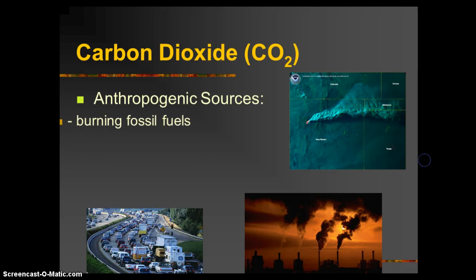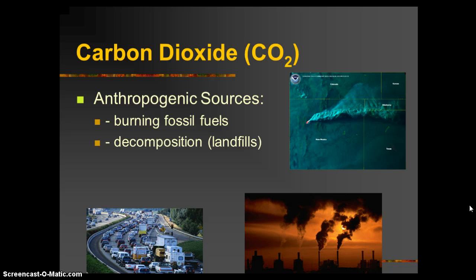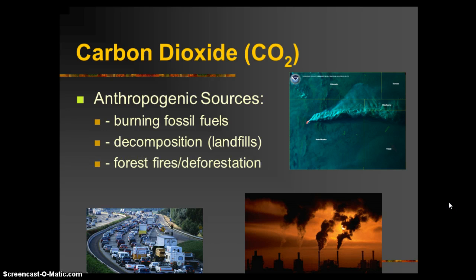More on carbon dioxide — anthropogenic sources, meaning humans are the cause. A satellite image here shows a fire releasing CO2. Anthropogenic sources include burning fossil fuels through power plants and vehicles, contributing to decomposition through landfills, deforestation, and forest fires — which humans can cause, though lightning can cause them naturally as well.